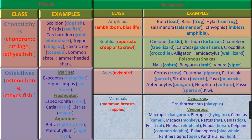Class Osteichthyes — where Osteon means Bone and Ichthyes means Fish — are bony fishes. Examples are marine fishes like Exocoetus (Flying Fish) and Hippocampus (Sea Horse); freshwater fishes like Labeo rohita (Rohu), Katla (Katla), and Clarias (Magur); and aquarium fishes like Betta (Fighting Fish) and Pterophyllum (Angelfish).